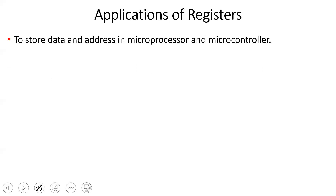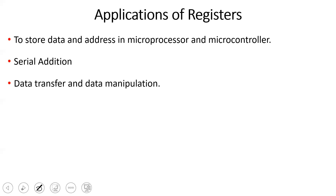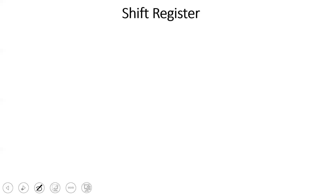How do we use registers? In microprocessors and microcontrollers, we can use general purpose, special purpose, or accumulator registers. Register A, B, C, or HL registers — these are all registers. They are used for data addition, data transfer, data manipulation, and to produce time delay in digital circuits. These are the applications of registers.